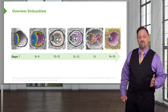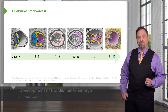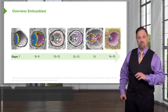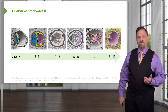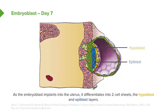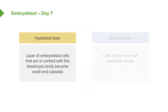Now let's look at how development proceeds from the blastocyst into the bilaminar embryo, as the embryo moves into the uterine wall from days 7 to 15. Initially, the inner cell mass — which forms the embryoblast — subdivides into a thin layer of cells in contact with the blastocyst cavity called the hypoblast, and a taller group of cells further away called the epiblast. The hypoblast cells are small and cuboidal, proliferating to surround the blastocyst cavity, whereas the epiblast cells grow taller and will actually create the entirety of the embryo from this stage on.